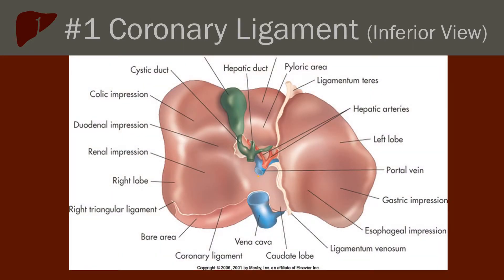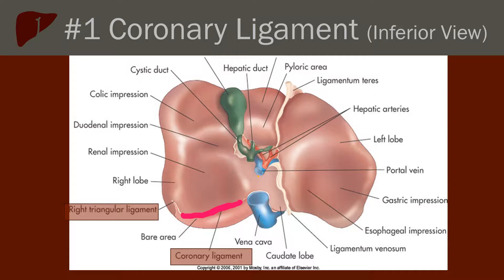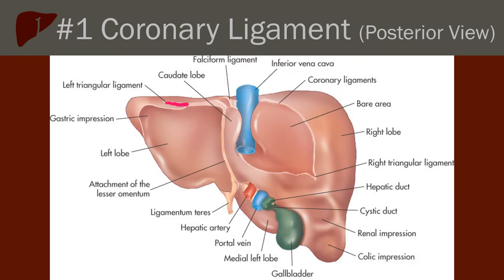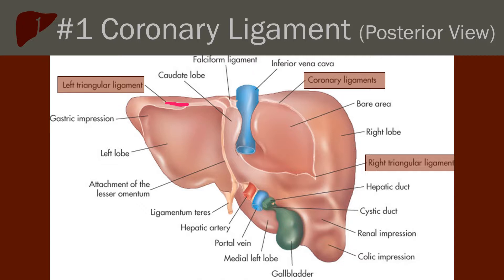This image shows the inferior view of the liver where we can see the coronary ligament arising from the inferior portion of the bare area and connecting to the right triangular ligament. A further image of the coronary ligament shows the anterior and posterior portions and how they connect to the right and left triangular ligaments. Remember that the coronary ligaments attach to the diaphragm and then surround the bare area.